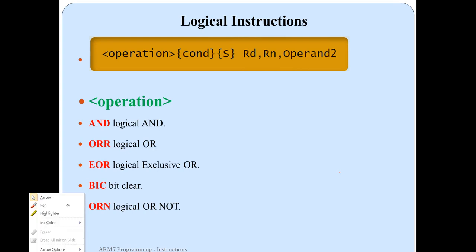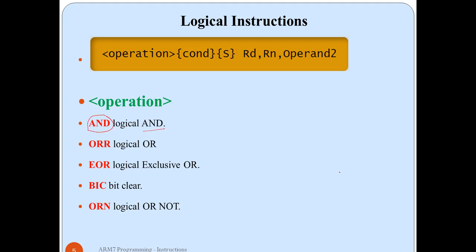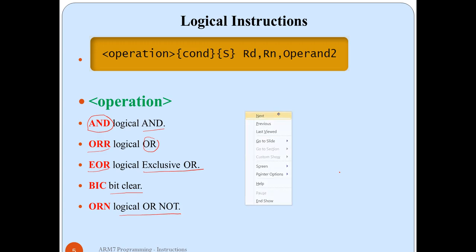Now we start with the logical instructions. The AND instruction is used to perform a logical AND operation. For example: AND R9, R2, R1 — this is a straightforward instruction where the result is stored into R9 and the AND operation is performed on R1 and R2. All these registers are 32 bits wide, meaning they can store 32-bit numbers.